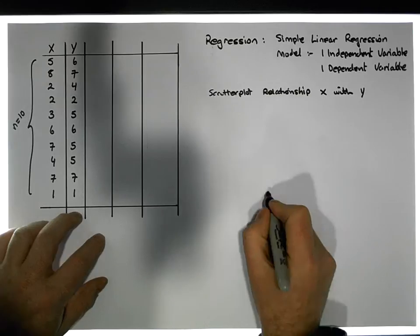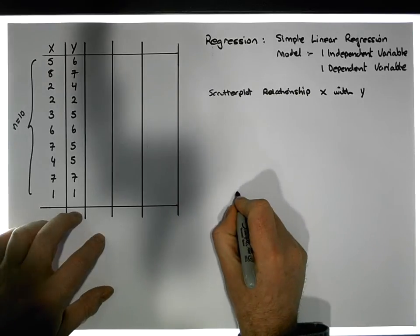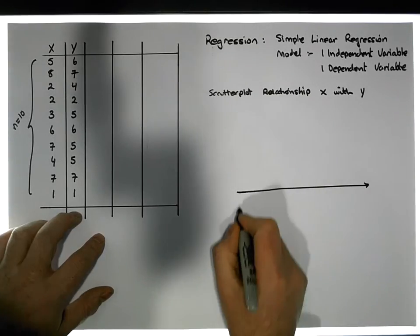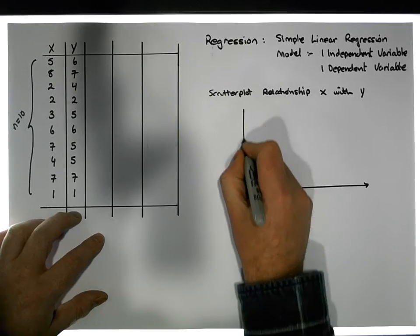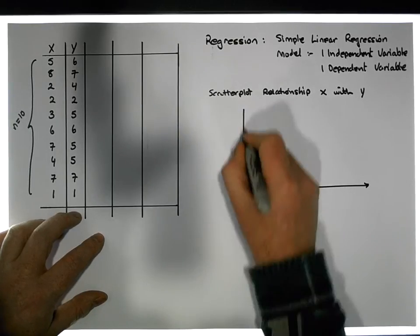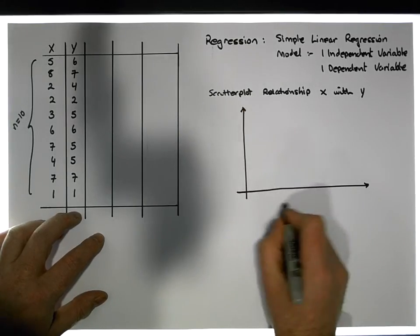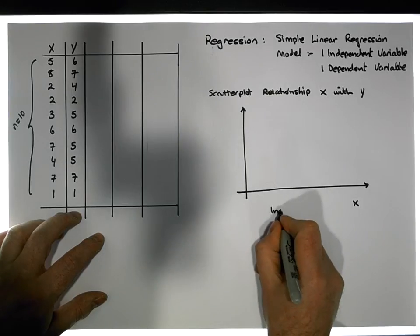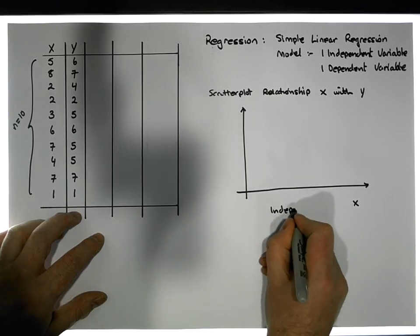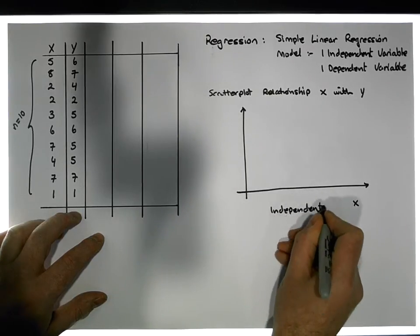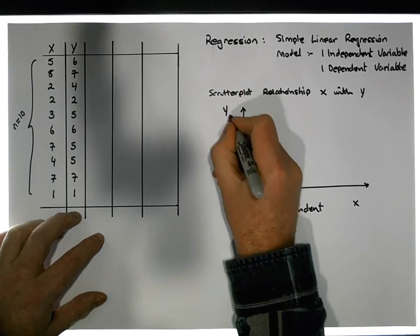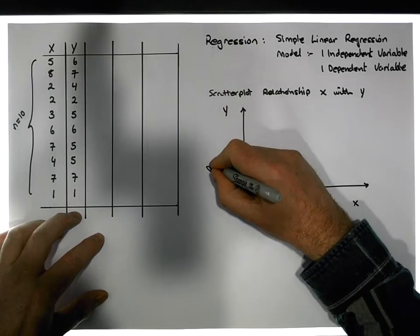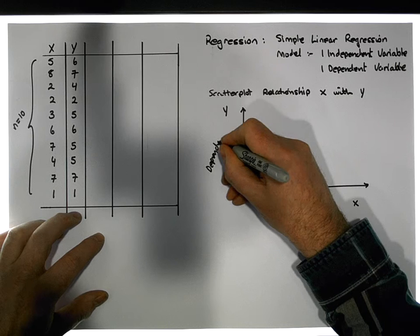So if I want to do a scatter plot, the scatter plot has a horizontal axis and a vertical axis. The x variable is listed across the horizontal axis — this is our independent variable. And our y variable is listed across the vertical axis — this is our dependent variable.